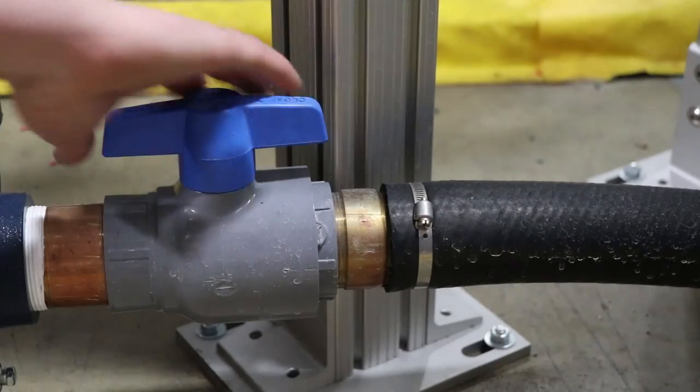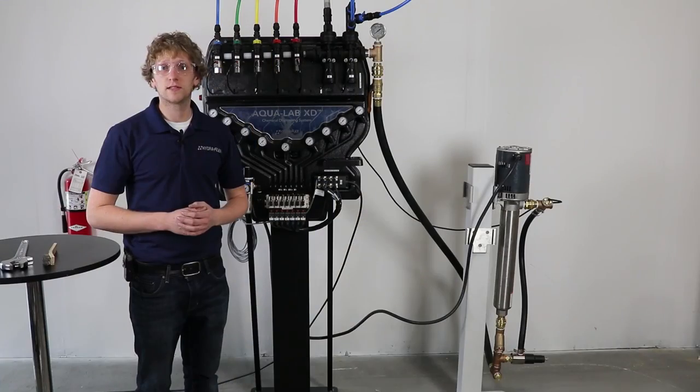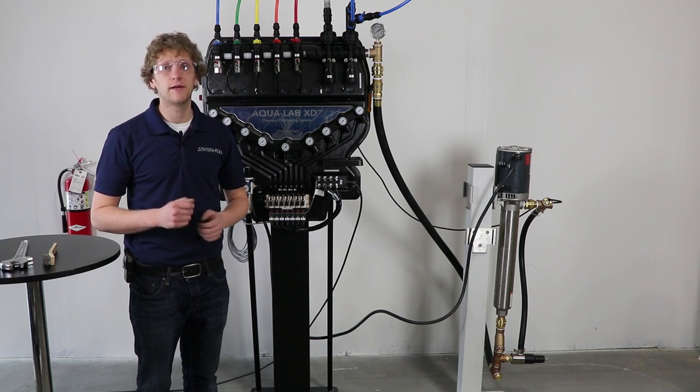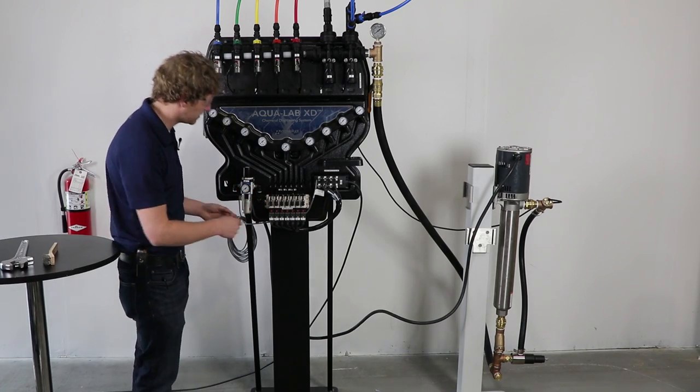First we will need to turn off the inlet water supply to the pump. Once the water supply is turned off we will need to bleed off any residual pressure by manually opening any valve by pressing the red button on the air valve located on your AcoLab panel.